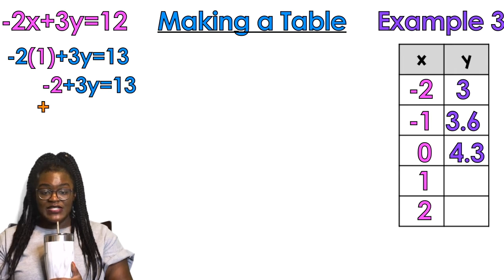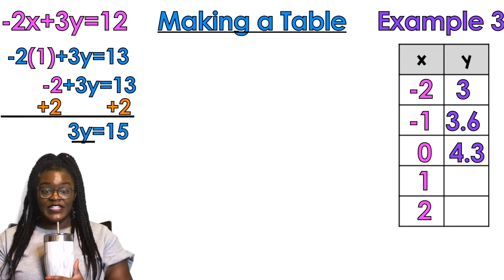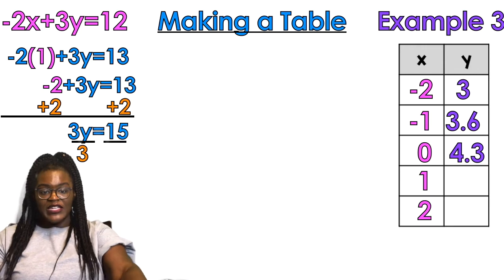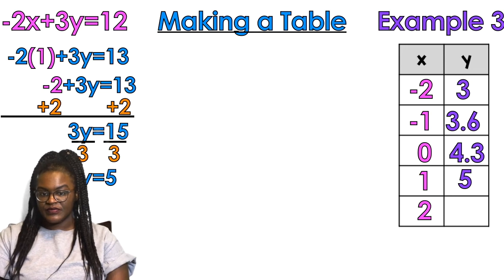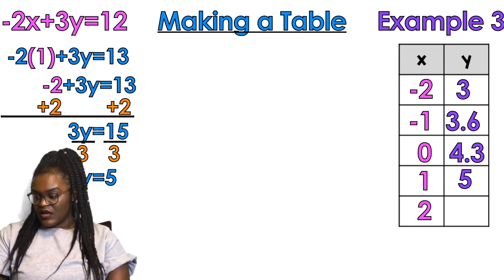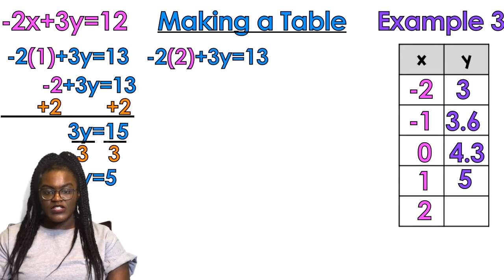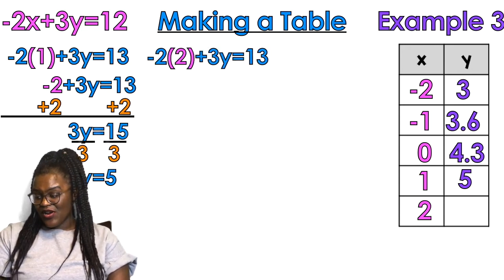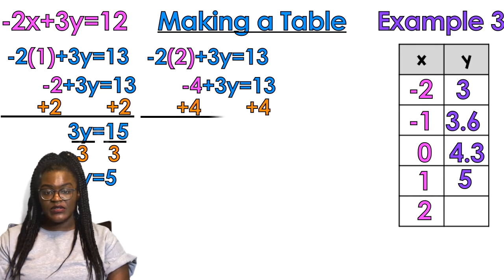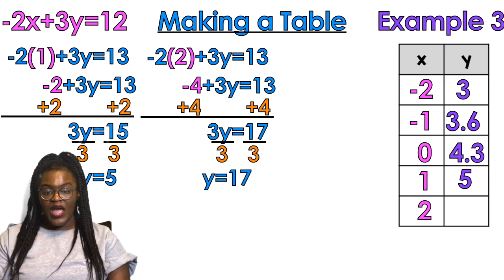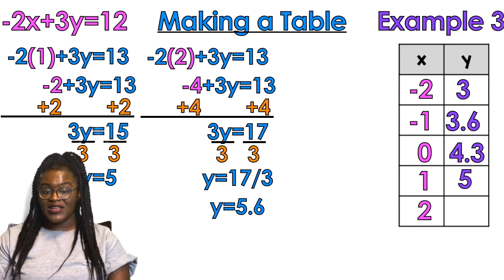I'm plugging in 1 now: 3y equals 15, so y equals 5. And the last number is positive 2: negative 2 times 2 is negative 4, plus 3y equals 13, so 3y equals 17, y equals 17 over 3, which is approximately 5.6.